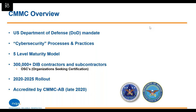One of the key things is that it's a significant lift. Estimates range from 300,000 to 350,000 contractors throughout the defense industrial base that will need to achieve CMMC over the next five years or so. Those organizations — many of you on the line — will be known as OSCs, or Organizations Seeking Certification. This being a new program comes along with a lot of new acronyms, and I'll try to explain those as I go along.